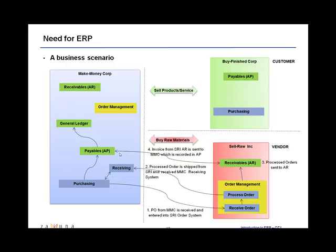The AR invoice created in Sell Raw Ink is received by Make Money Corp and entered into their payables system. You again see a document created in one system — the AR system — which when received by the customer, Make Money Corp, is entered into their AP system. Once the payables system validates that invoice against an existing purchase order, they pay the vendor. That payment updates the AR system on the vendor's side, clears the liability, and the vendor collects their money.